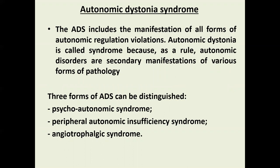Autonomic dysregulation syndrome is called a syndrome because autonomic disorders are, as a rule, secondary manifestations of various forms of pathology. There are three main forms: psychoautonomic syndrome, peripheral autonomic insufficiency syndrome, and angiotrophic syndrome.